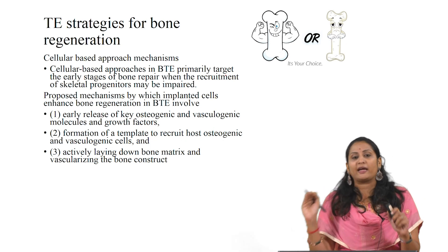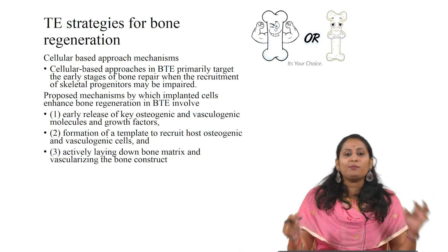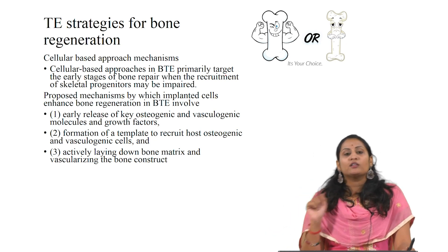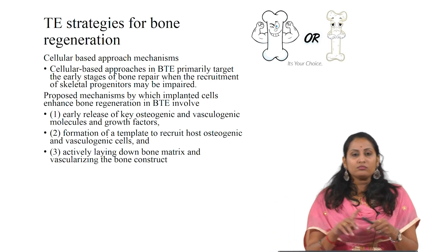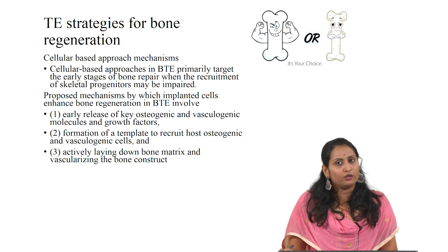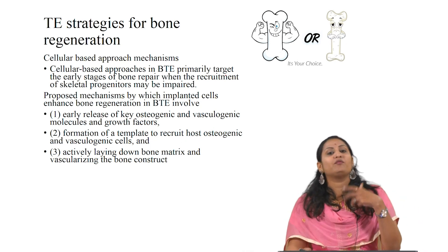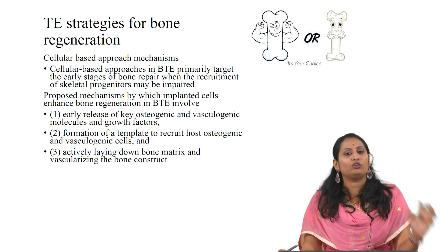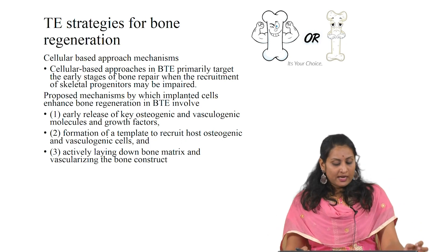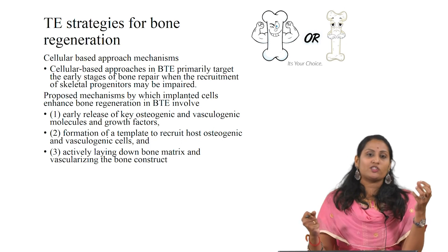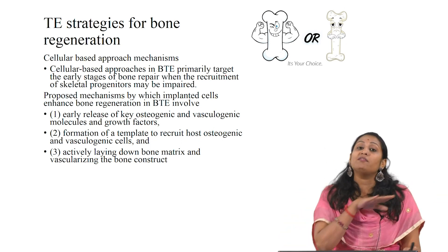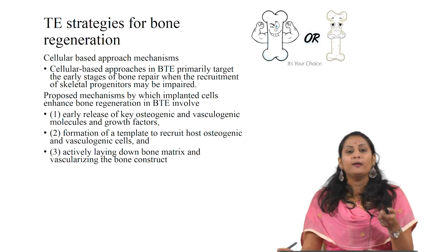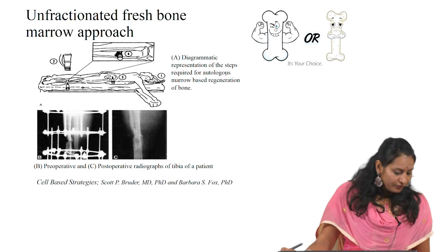These approaches primarily target the early stages of bone repair when skeletal progenitors become impaired, which can be due to trauma, disease conditions, or aging. The proposed mechanisms by which implanted cells enhance bone regeneration involve: first, early release of key osteogenic and vasculogenic molecules and growth factors; second, forming a template to recruit osteogenic and vasculogenic cells; and third, actively laying down the bone matrix and vascularizing the bone construct. The first approach is unfractionated fresh bone marrow.